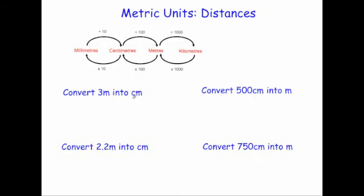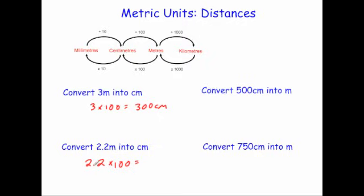Now we're going to convert between metres and centimetres. First question: convert 3 metres into centimetres. To go from metres to centimetres you multiply by 100, so 3 times 100 equals 300 centimetres. Next, convert 2.2 metres into centimetres: 2.2 times 100 — move the decimal place twice — equals 220 centimetres.